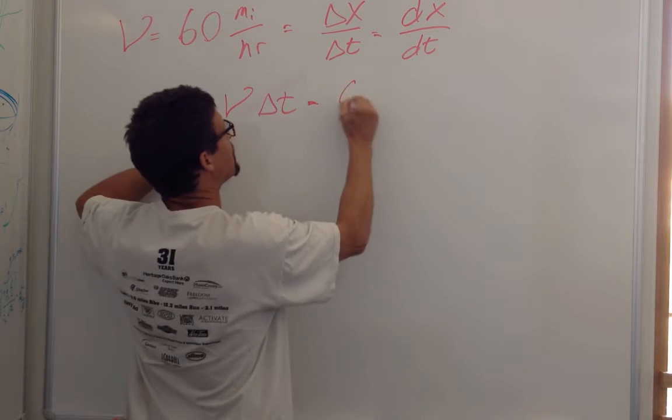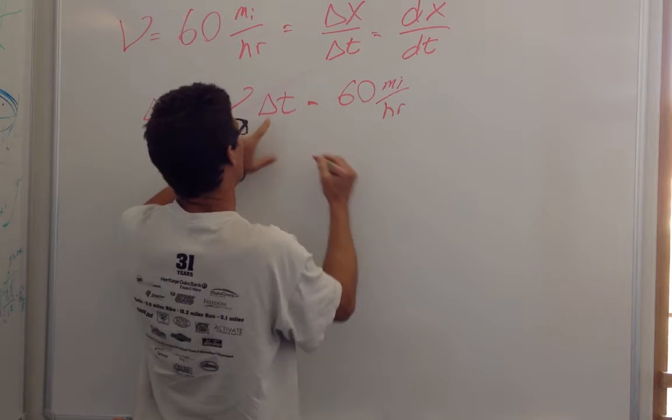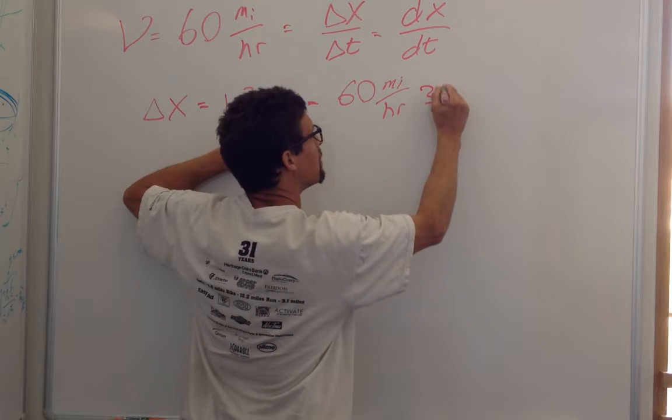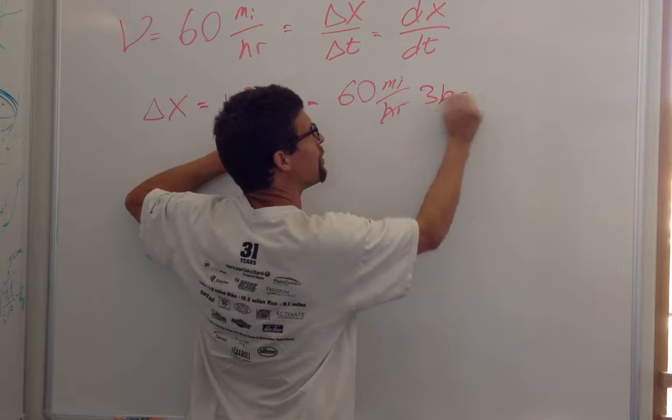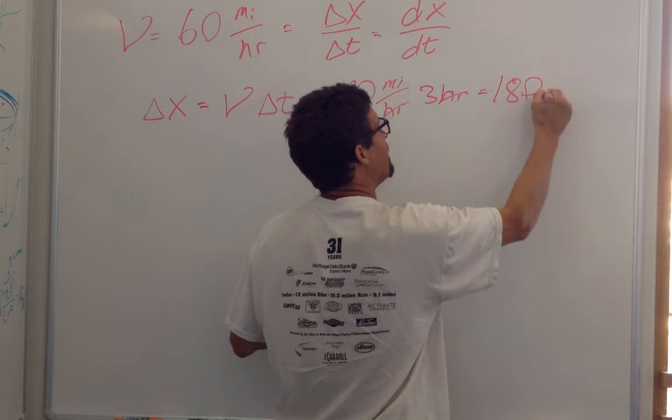I'm going 60 miles per hour for three hours. I cancel the units, hours, and I wind up with 180 miles.